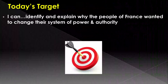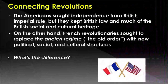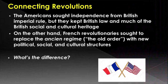This lesson's target is: how did the people of France change their system of government? Here are two different statements to think about. The top one says the Americans sought independence from British imperial rule, but they kept British law and much of the British social and cultural heritage — meaning even though we broke away from Britain, we kept a lot of the way they do things. But France is going to do something dramatically different.